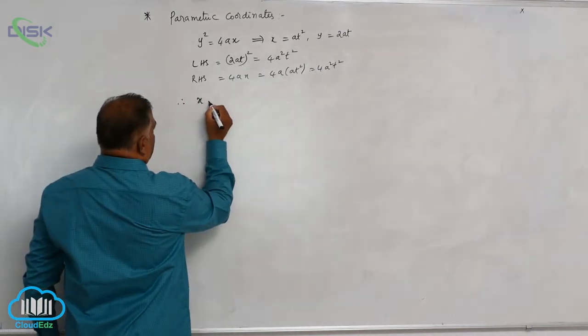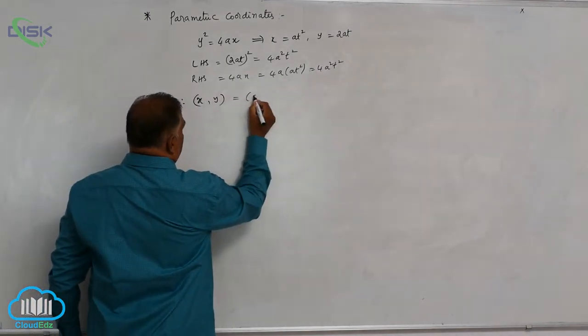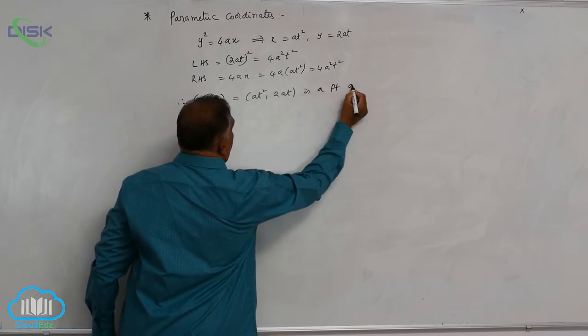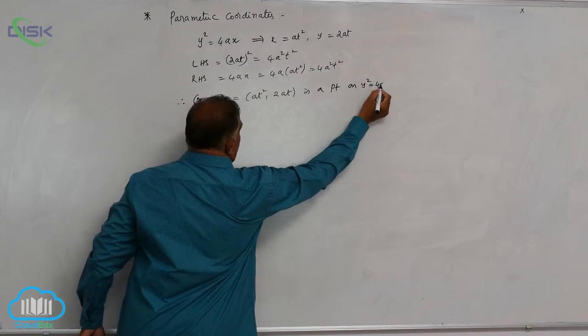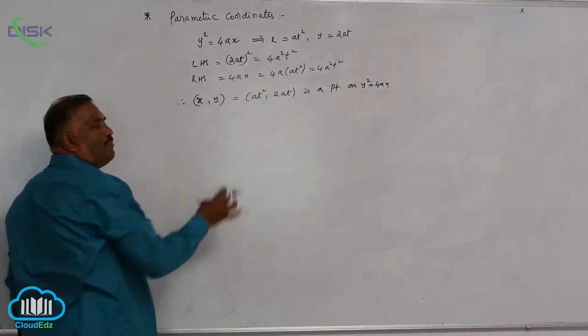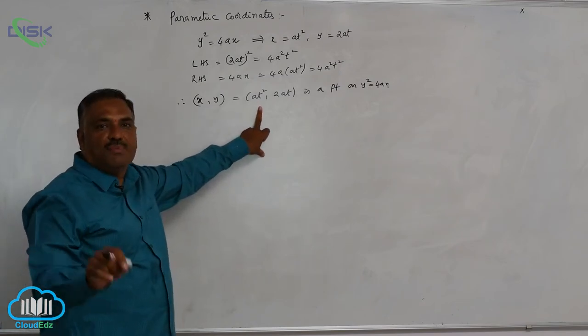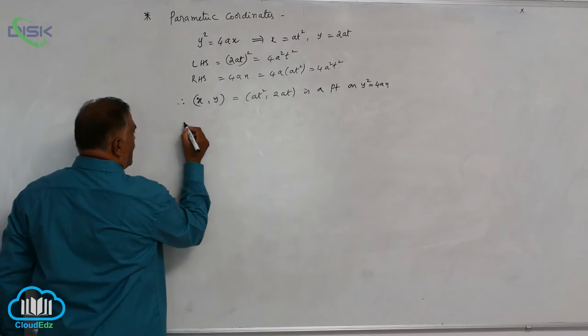In general, x comma y is equal to at square comma 2at is a point on y square equal to 4ax. This is called parametric coordinates as coordinates are expressed in terms of parameter.